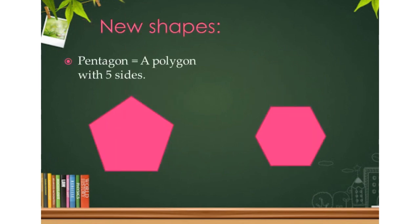Now we are going to learn about new shapes. The first one, which has 5 sides, is called a pentagon. A polygon with 5 sides is called a pentagon. Another one is hexagon, which has 6 sides. So pentagon has 5 sides and hexagon has 6 sides.